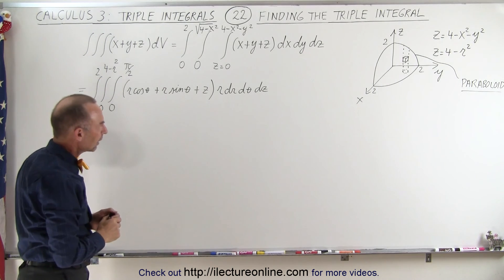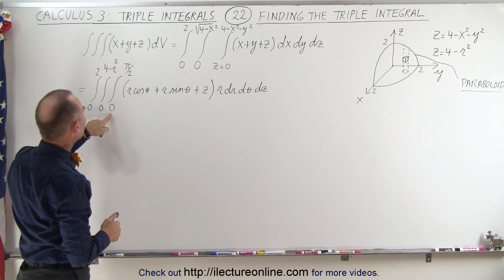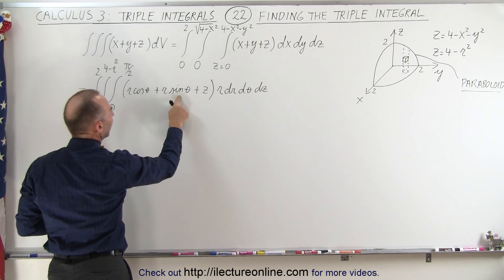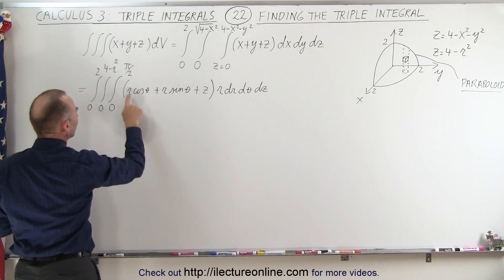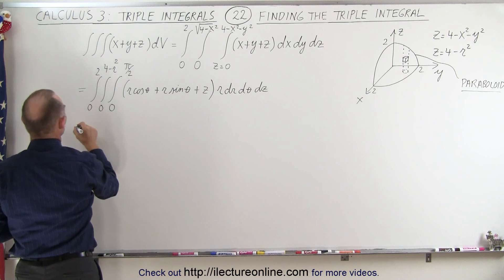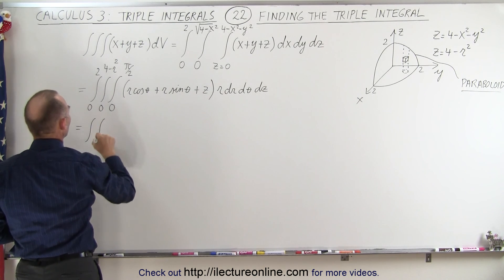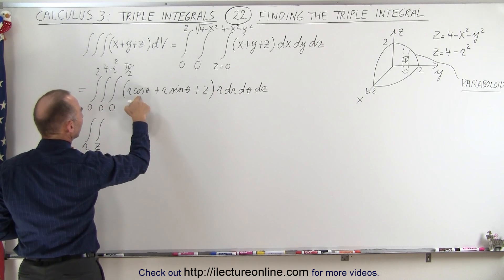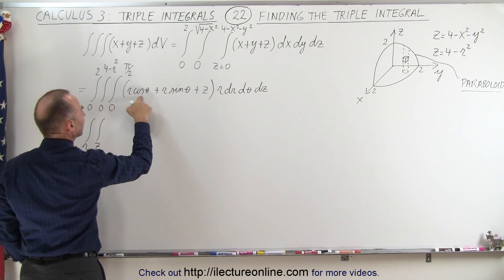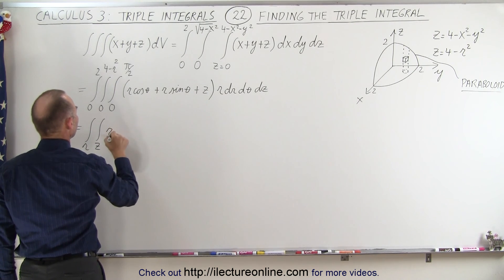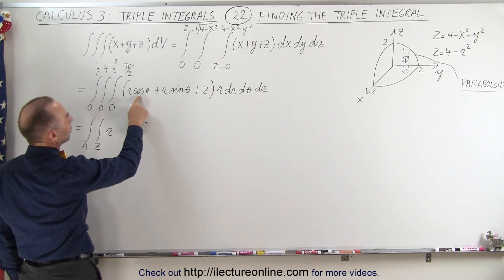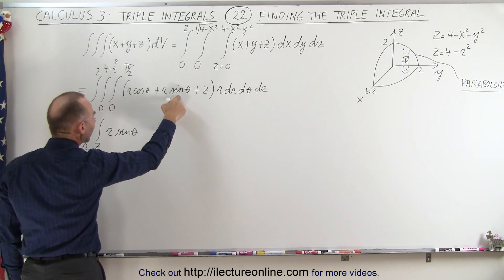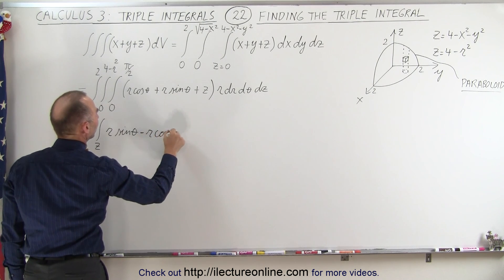Let's start by integrating over the angle theta. We're going to integrate r cosine theta and r sine theta times dθ. The r will be a constant during this integration. The integral of cosine theta is sine of theta, and the integral of sine theta is negative cosine, so it's minus r times cosine of theta.